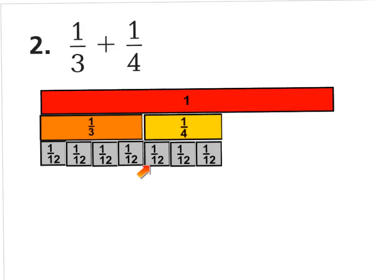Looking at this model, I can see that 1/3 has the value of 4/12 and 1/4 has a value of 3/12. Now we can count up to see the value that 1/3 plus 1/4 will equal — 1, 2, 3, 4, 5, 6, 7/12. So 1/3 plus 1/4 equals 7/12.